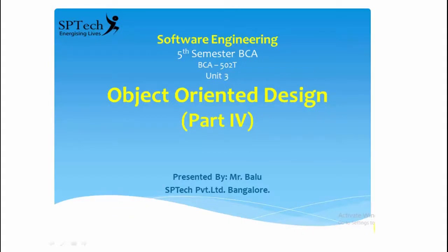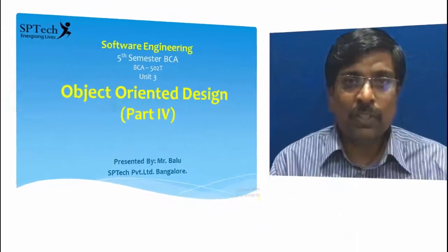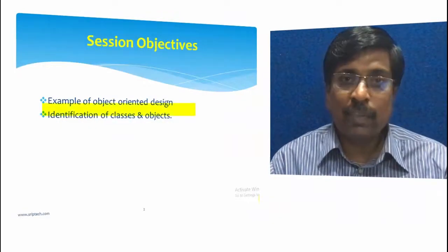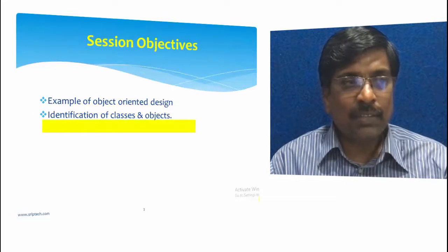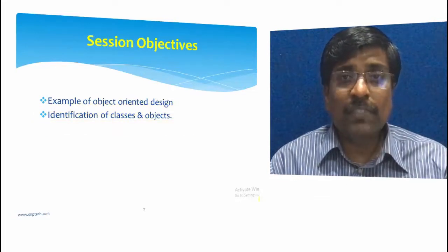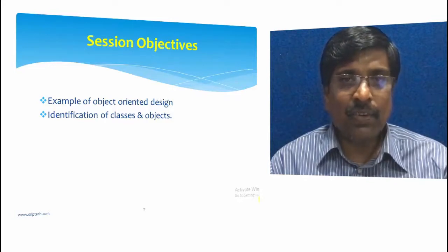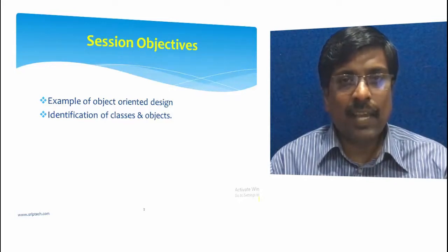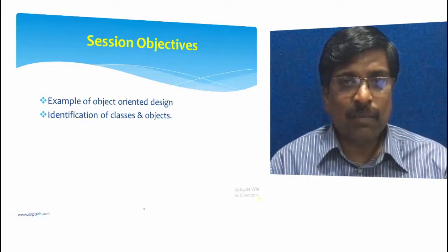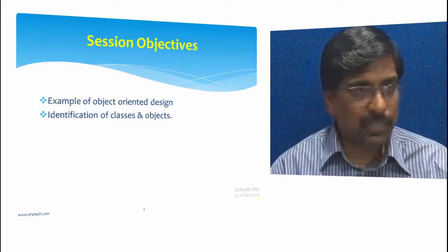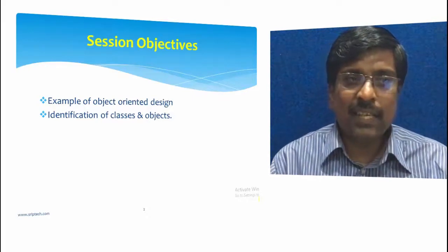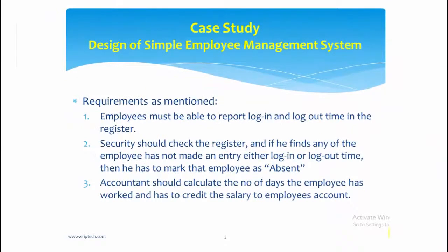Hi, welcome back. Today is going to be the last session on object-oriented design — we are in Part 4. This is Baloo here from SP Tech Bangalore. Today we are going to focus on two points: we are going to see an example of an object-oriented design, and we are going to see how to identify classes and objects in a given scope. We'll take a case study — specifically a simple employee management system.